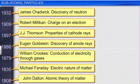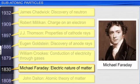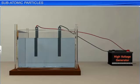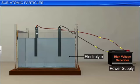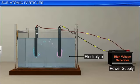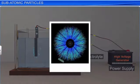For example, it could not explain the electric nature of matter as explained by Michael Faraday through his experiment in 1830. Michael Faraday found that when electricity is passed through an electrolyte, which is a solution that conducts electricity, chemical reactions resulting in the deposition of matter at the electrodes take place. This experiment proved that electricity consists of charged particles, which in turn indicated the electric nature of matter.